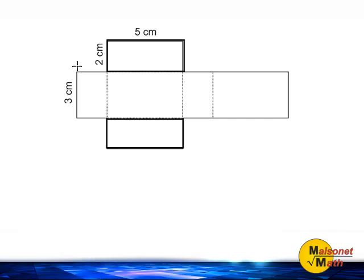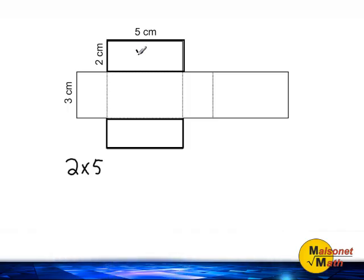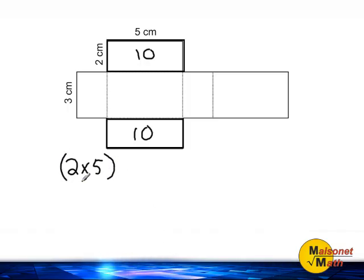We can see that the dimensions of this rectangle up here are 2 by 5. So what I'm going to do below is write those dimensions — 2 by 5, or 2 times 5. So we know that this rectangle here has an area of 10, which means this rectangle, which is congruent to it, also must have an area of 10 square centimeters. And because we have two sets of rectangles with dimensions that are 2 by 5, we are going to write a number 2 on the outside of this set of parentheses. This just means we have two rectangles with the dimensions that are 2 by 5.